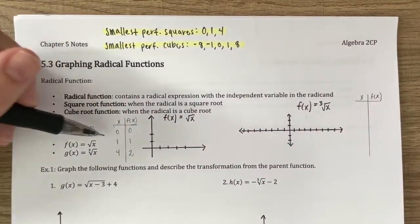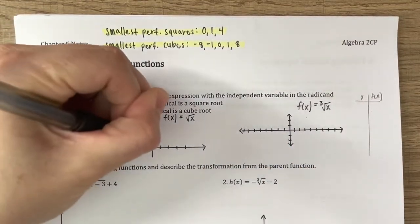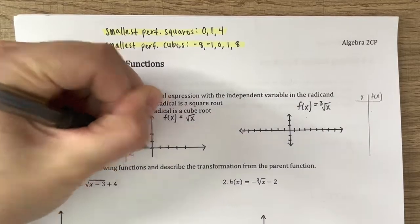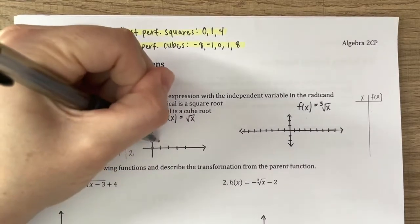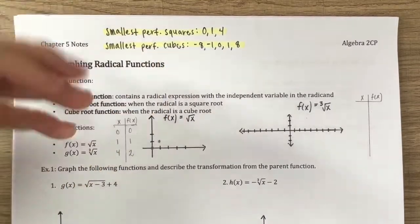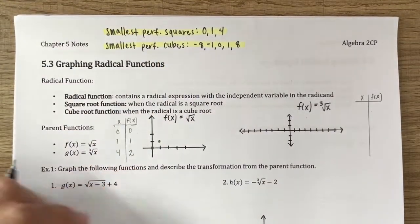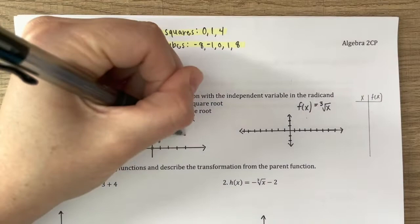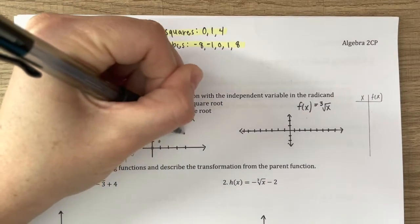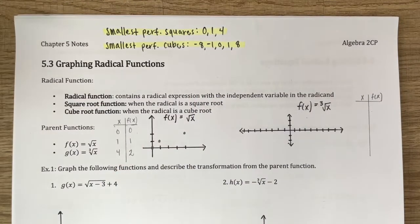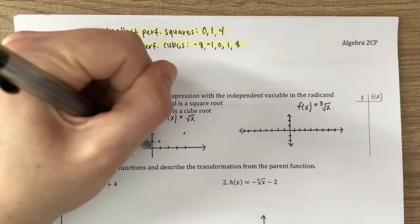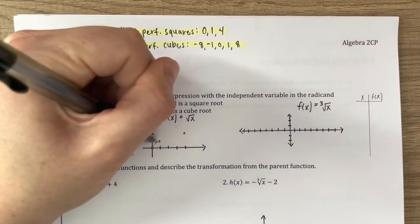If I input 0 into the square root of x, the square root of 0 is 0; the square root of 1 is 1; and the square root of 4 is 2. So I have the points (0, 0), (1, 1), and (4, 2), and then we can connect through our points.